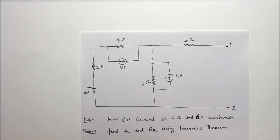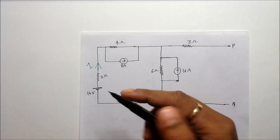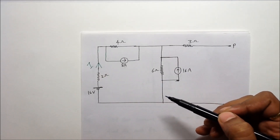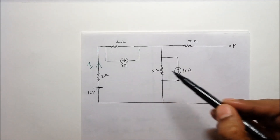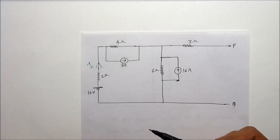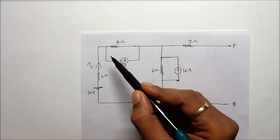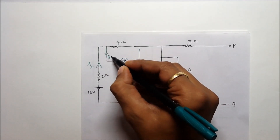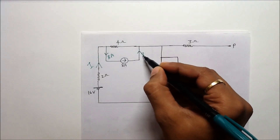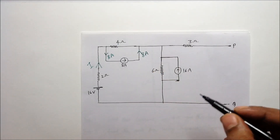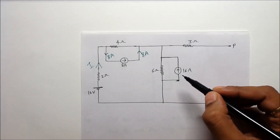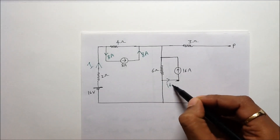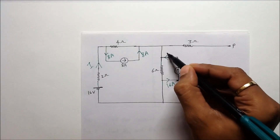To solve the first problem, let us assume that current i is flowing. There are two current sources present in this problem: an 8 ampere current source and a 16 ampere current source. This 8 ampere current source will maintain 8 ampere in this branch, so this is 8 ampere here. This 16 ampere current source will maintain 16 ampere in this branch, so we can write 16 ampere here.